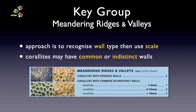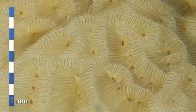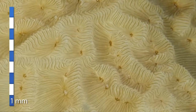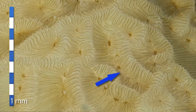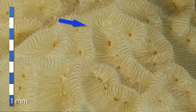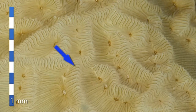The alternative to separate walls in the Coral Finder logic is common or indistinct walls. Here's a tip: review the second movie where we showed that coralites can live in groups in shallow valleys and that the colony surface can have bumps and ridges that are not tied to a coralite.